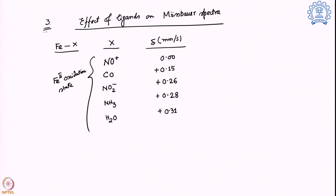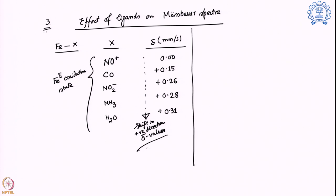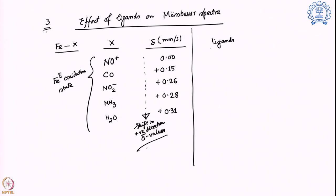Now we have to understand why we see a shift in the positive direction for these delta values. For that we are going to look into the properties of the ligands themselves. The ligand can be distributed in three different forms depending on its sigma and pi donation properties, because a ligand can interact with a metal in different ways.